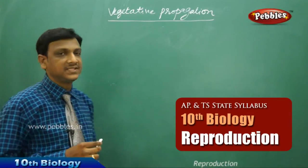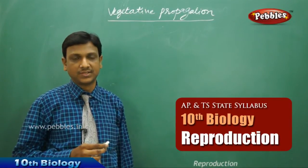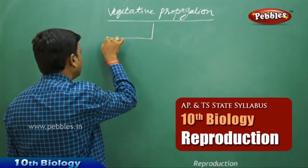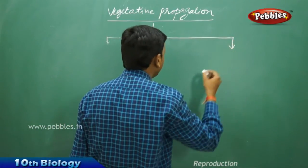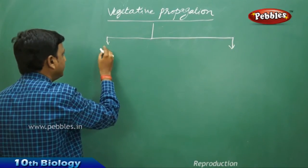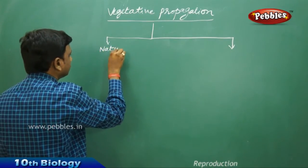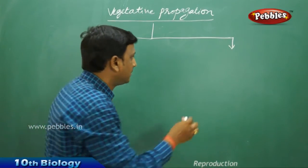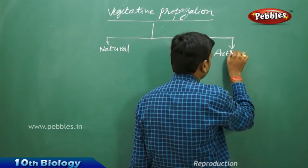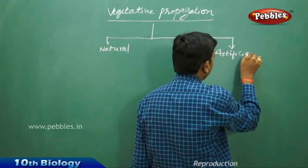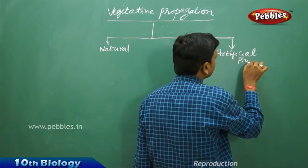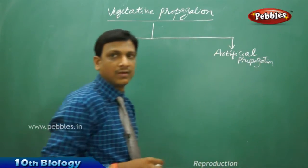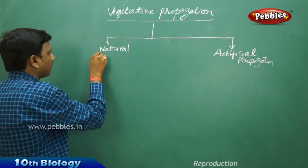We are going to discuss about vegetative propagation in plants. This is a mode of asexual reproduction observed in plants. It is classified into two major types: one is natural, which happens naturally in nature without human intervention, and the other is artificial propagation.